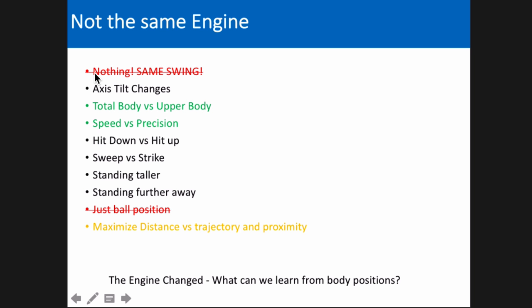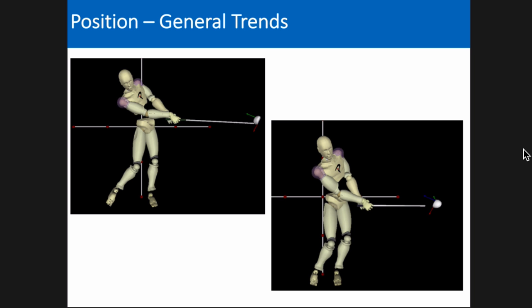So pros made these adjustments to their patterns where amateurs typically kept the same pattern — or in one case actually reversed the pattern in the wrong direction. Looking back at our hypotheses, we can rule out that the swings are identical and it's just ball position. We've built some support for the total body versus upper body argument and some support for the speed versus precision argument. But we haven't done much to address the angle of attack, axis tilt, or sweep versus strike — so that's what we'll look at next.